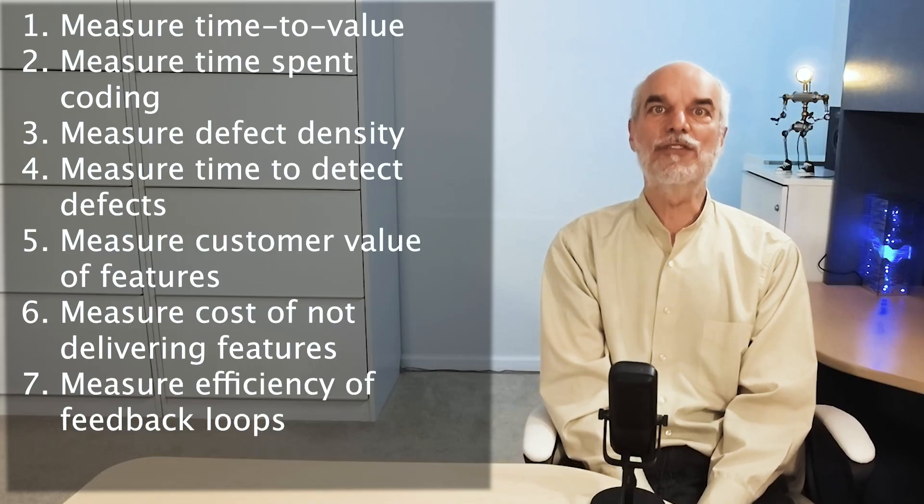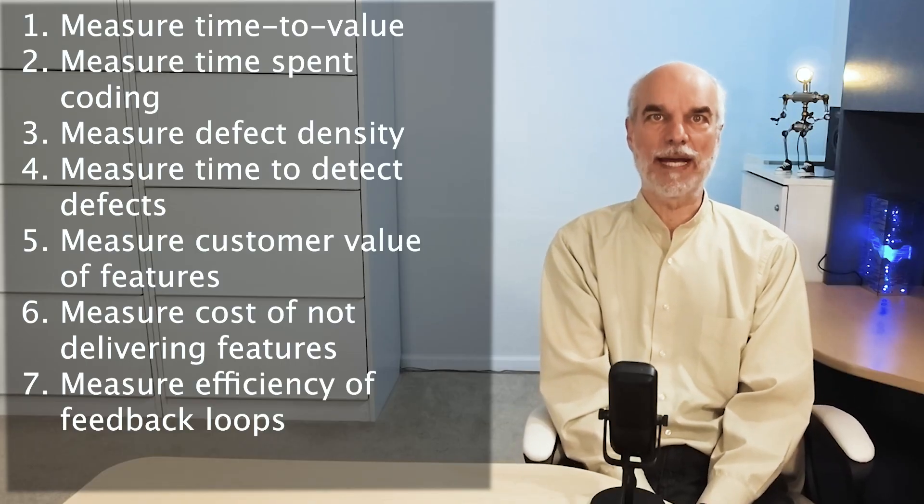And number seven: measure efficiency of feedback loops. The most powerful point of leverage for increasing efficiency is often in the process itself. A good development process has built-in feedback loops that can be used to tweak the process. The faster the feedback, the more efficient we can become. Find ways to fail fast and learn from failure. This is how teams rapidly improve.